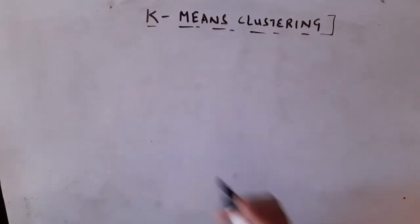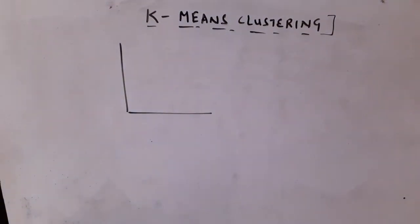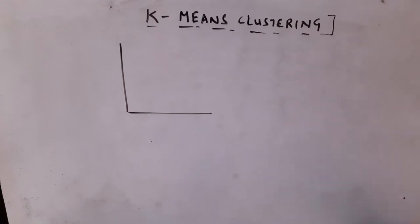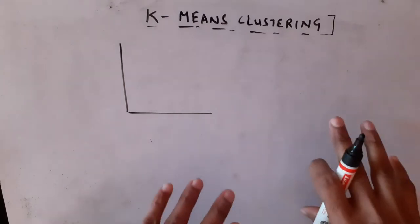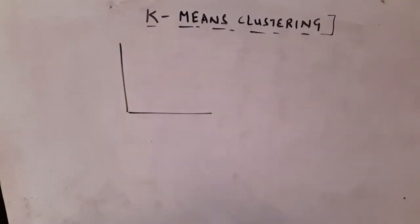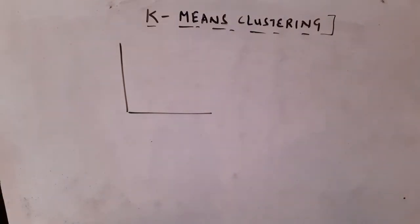Now let's get started with how it actually works. Assume that we have two-dimensional data, though in the real world we typically have n-dimensional data. We cannot draw or visualize n-dimensional data on a whiteboard, so I'm using a two-dimensional example to explain the steps involved in K-means clustering.